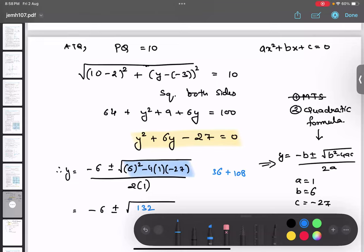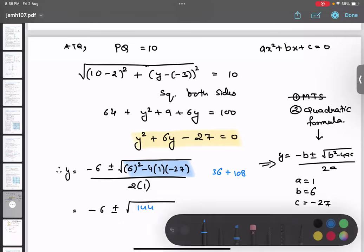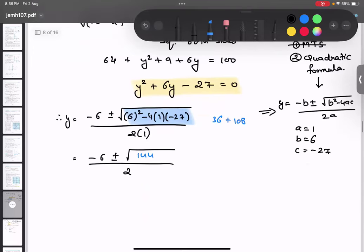So 36 plus 108 will give me 144. Is that thing clear? Yes. Upon 2.